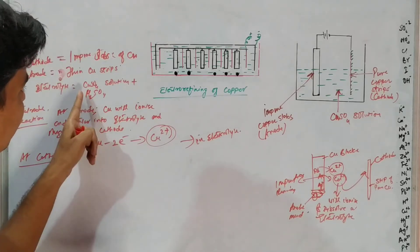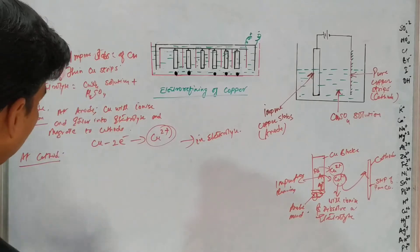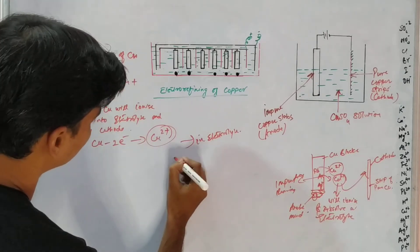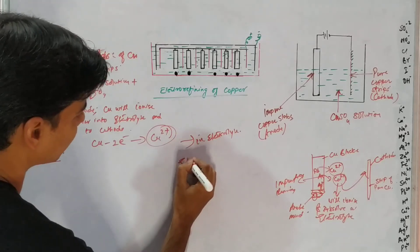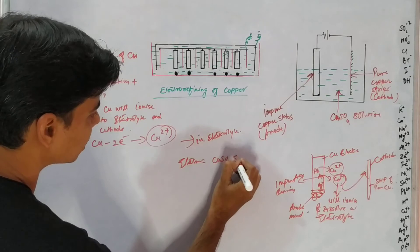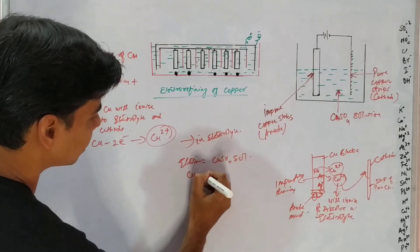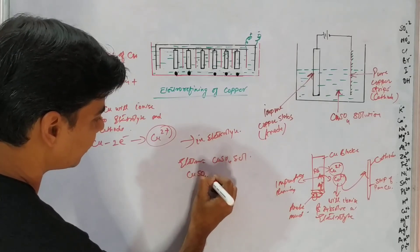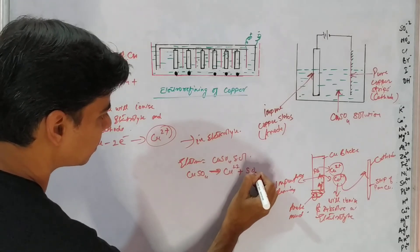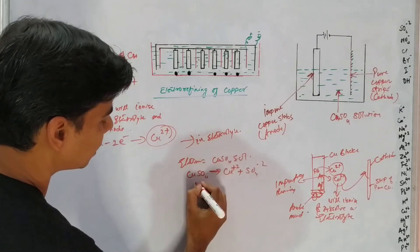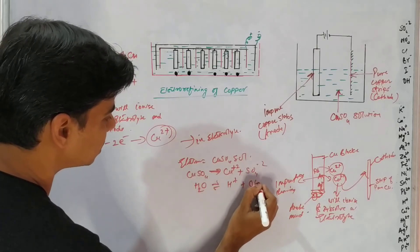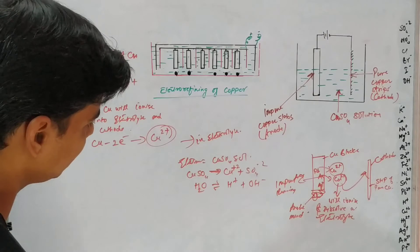At the cathode, copper ions from the electrolyte will be discharged. Our electrolyte is copper sulfate solution, so copper sulfate dissociates into Cu²⁺ ions plus SO₄²⁻ ions. In water, we also have H⁺ ions plus OH⁻ ions.